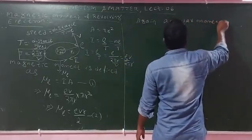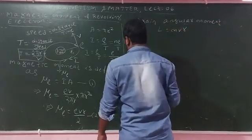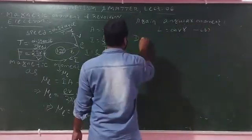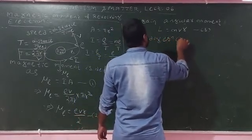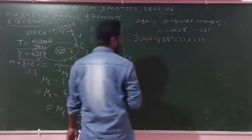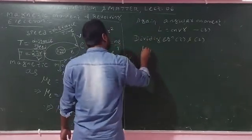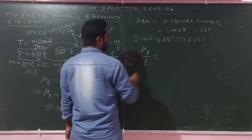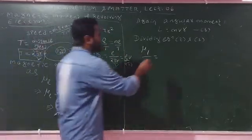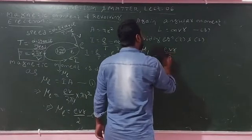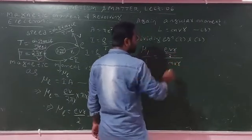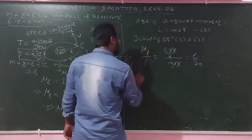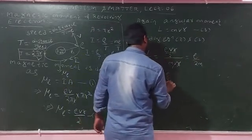The angular momentum of an electron is L equals mvr. Dividing the expression for mu_L by the angular momentum L, we get mu_L divided by L. After cancellation of r and v terms, mu_L divided by L equals E divided by 2M.